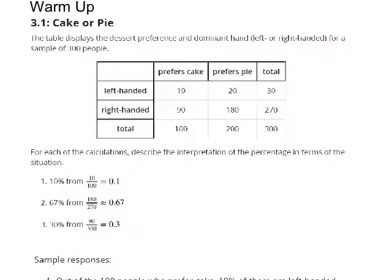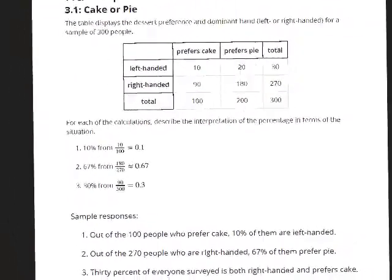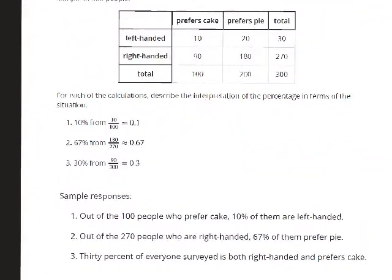Here you'll see the answers now. The 10% means that 10% of the people who prefer cake are left-handed. The 67% in question two says out of the 270 people that are right-handed, 67% — or 180 of them — prefer pie. And lastly, the 30% takes the 90 that prefer cake out of everybody surveyed, which is 300 people. So 30% of the total population prefer cake and are right-handed.